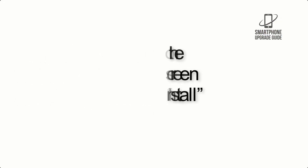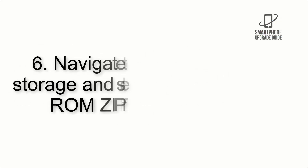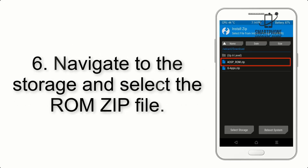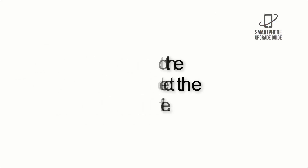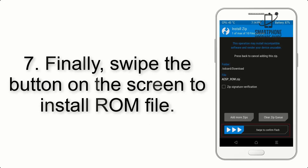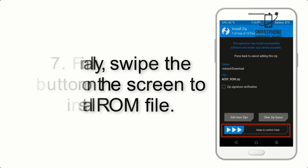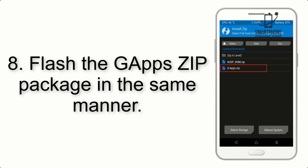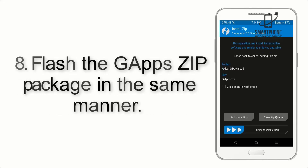Step 5: Go back to the recovery main screen and tap on the Install button. Step 6: Navigate to the storage and select the ROM zip file. Step 7: Finally, swipe the button on the screen to install the ROM file.